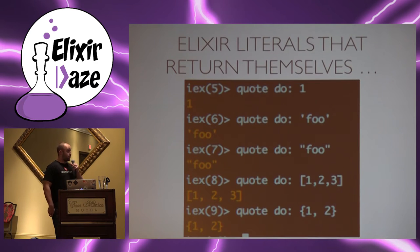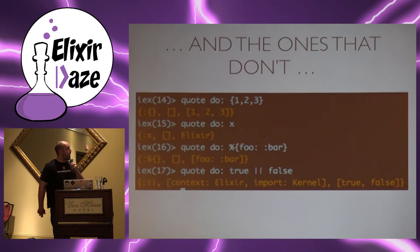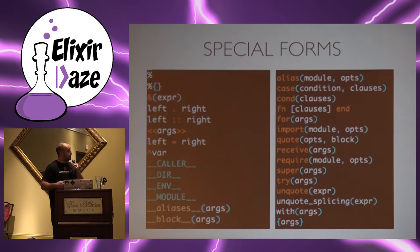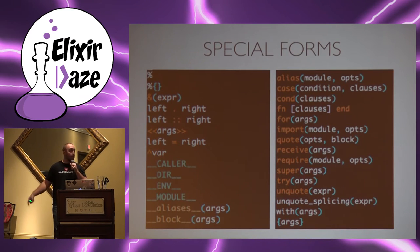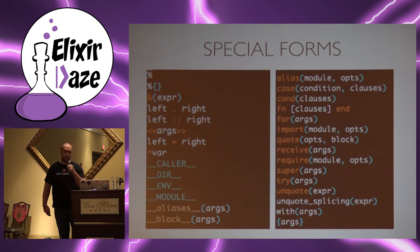Some Elixir literals are already in their valid AST form — they return themselves. Those include integers, character lists, strings, lists, and two-element tuples. The ones that don't include three-element tuples, variables, maps, and macros. Additionally, anything not in that list will continue to be expanded all the way out until you get down to something defined on Kernel.SpecialForms, which are basically the building blocks of Elixir.